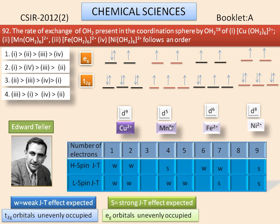For Mn2+ and nickel 2+, the T2G and EG orbitals are evenly occupied. So it will not have any Jahn-Teller effect.